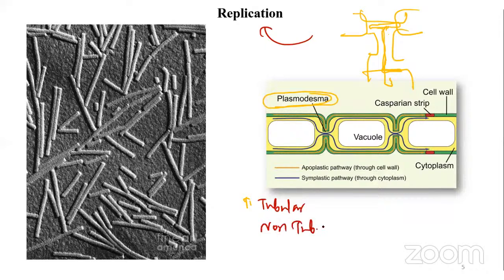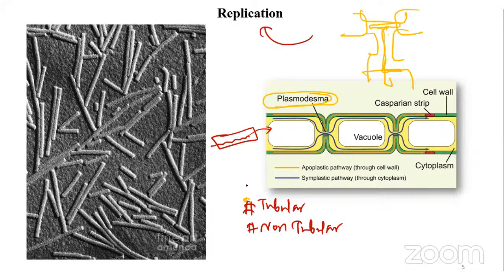Virus movement can be either tubular or non-tubular. In tubular form, the virus is coated inside a tube and transported - like a pipe carrying the virus. In non-tubular form, the virus is not inside a tube when transported. TMV uses the non-tubular form of movement.